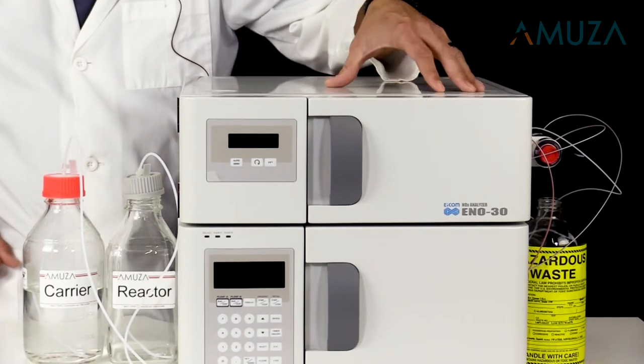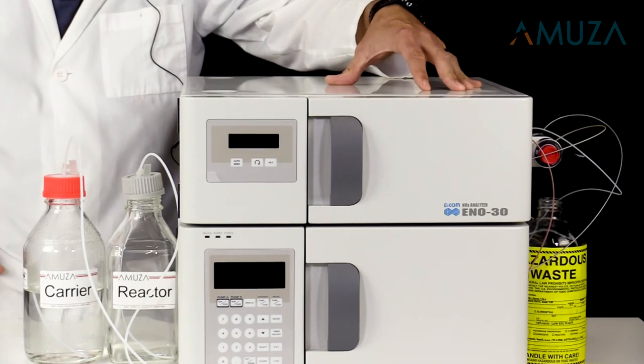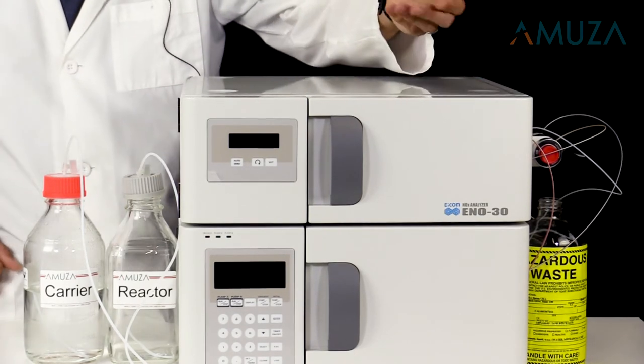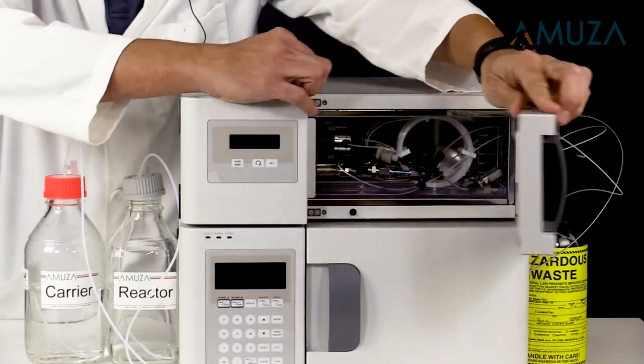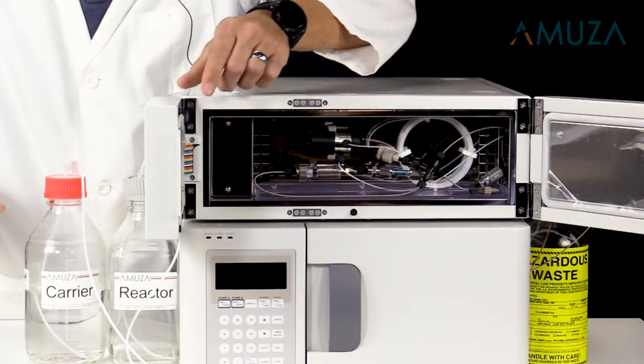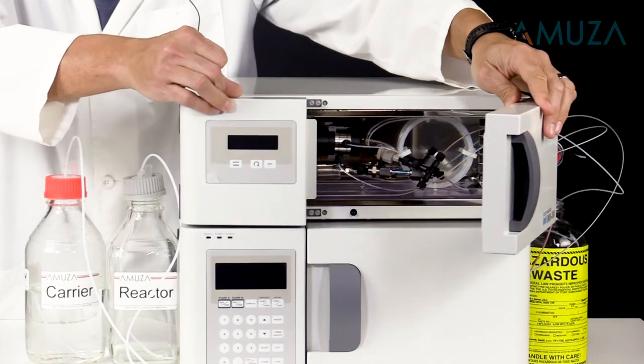The ENO30 combines HPLC with colorimetric analysis. It's like having a chemist and HPLC expert right on your bench top. We've optimized the conditions to take away the guesswork and made the system straightforward and easy to use.